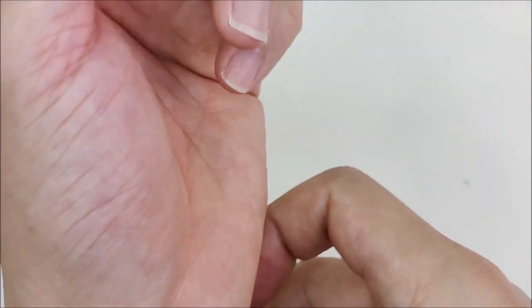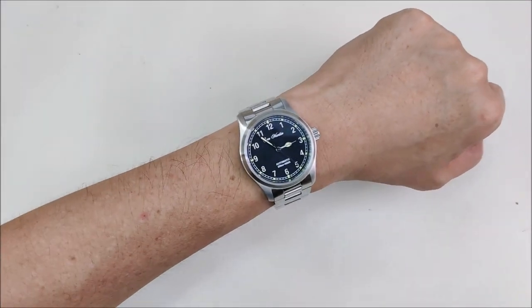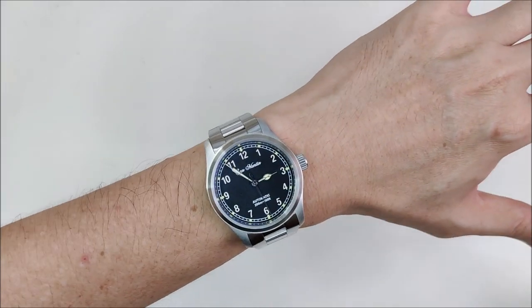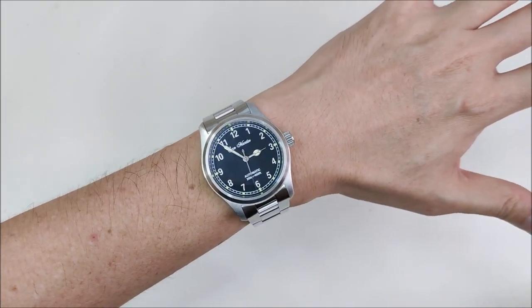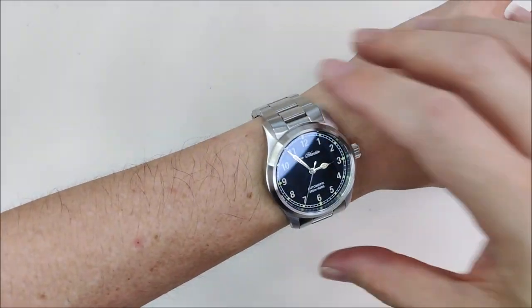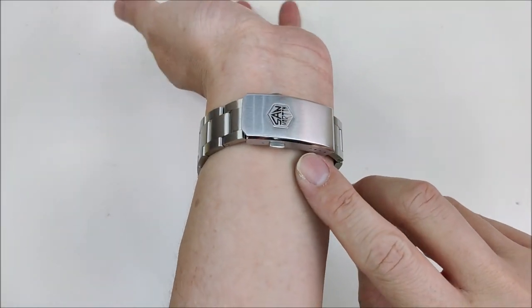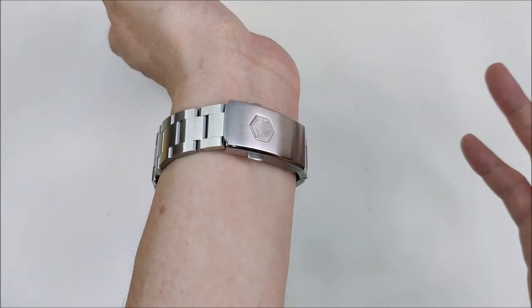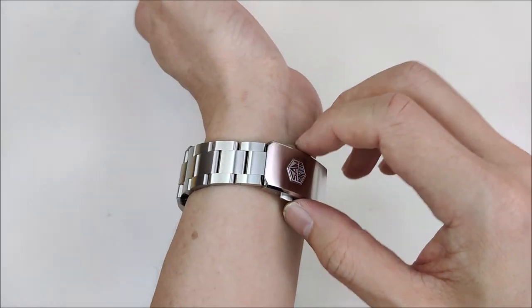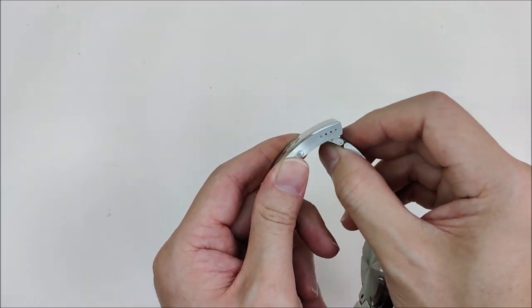It fits my wrist better because on the previous clasp it was either too tight or too loose. So here I think I managed to get quite a snug fit. I'm on the last micro adjustment position, and let's say if it's hotter or what, I can move it a notch out. But it's not easy because it's not as smooth as I wanted it to be.